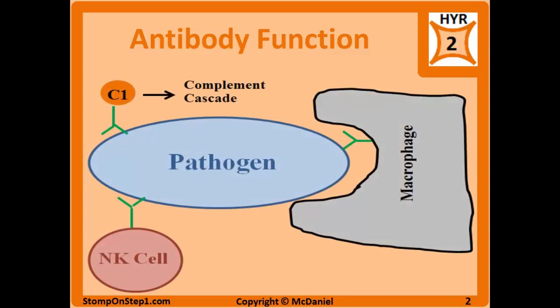Here's a diagram depicting a few of the most important processes that antibody plays a part in. Antibodies tag pathogens so they can be more easily recognized by the immune system, which can then be activated more quickly or in a more potent fashion. One end of the antibody binds to the pathogen while the other end interacts with NK cells, macrophages, or complement.